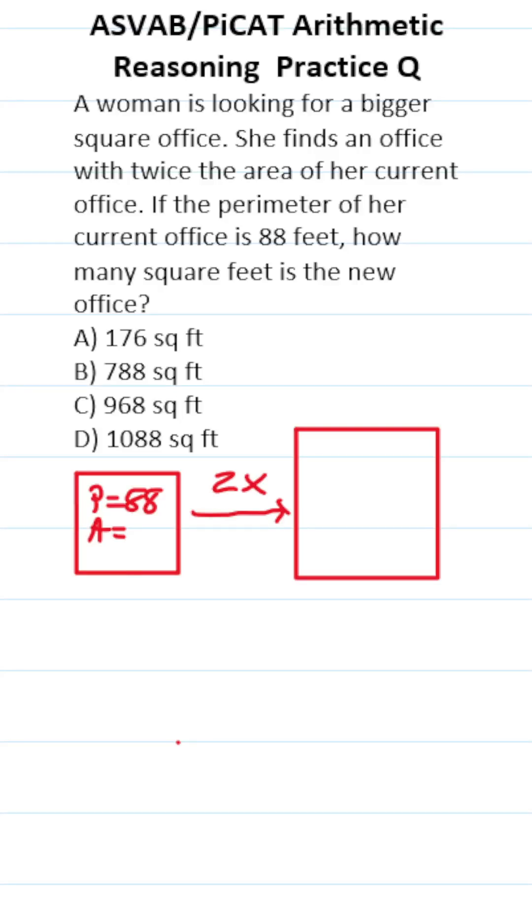This ASVAB PyCAD Arithmetic Reasoning Practice Test question says a woman is looking for a bigger square office. She finds an office with twice the area of her current office. If the perimeter of her current office is 88 feet, how many square feet is the new office?